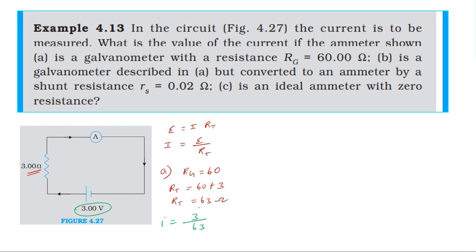60 ohm. So the current equals 0.0476 ampere, which we can round to approximately 0.048 ampere.